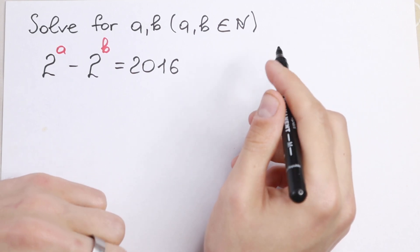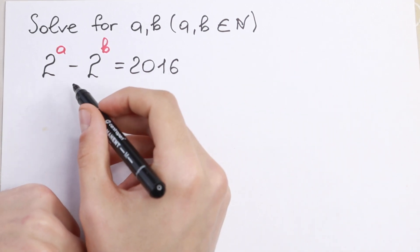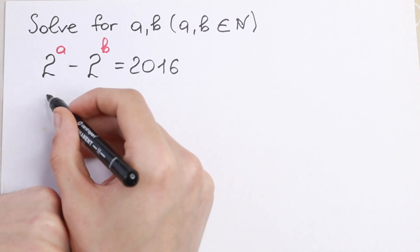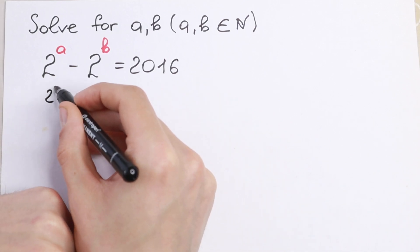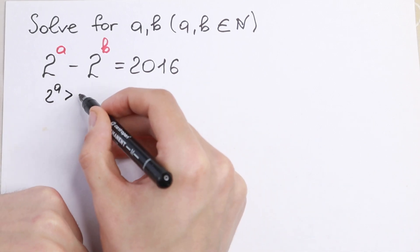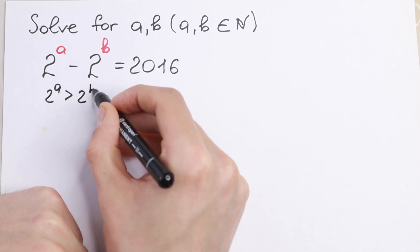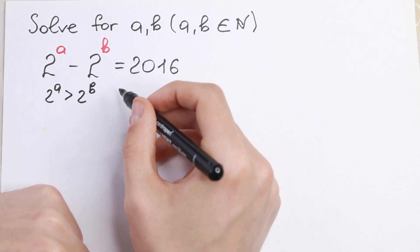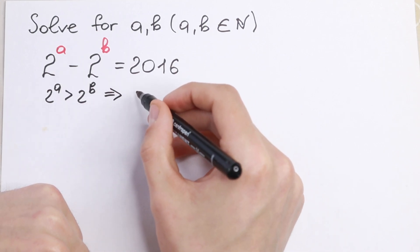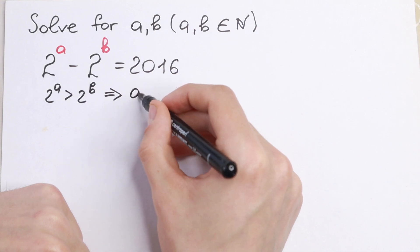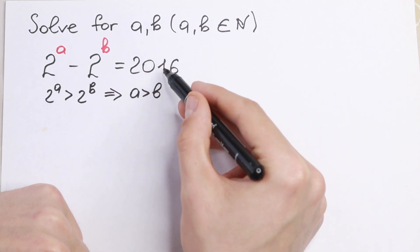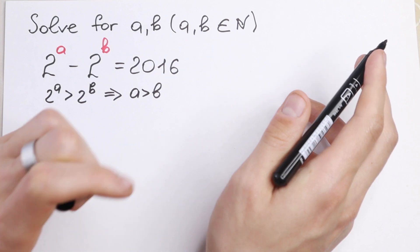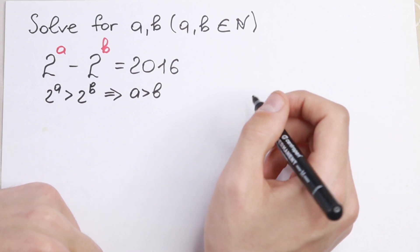Firstly we note a really important case. On the right hand side we have a positive value, so 2 to the power A is greater than 2 to the power B. This is the basic of mathematics — since the right-hand side is positive, A is greater than B.